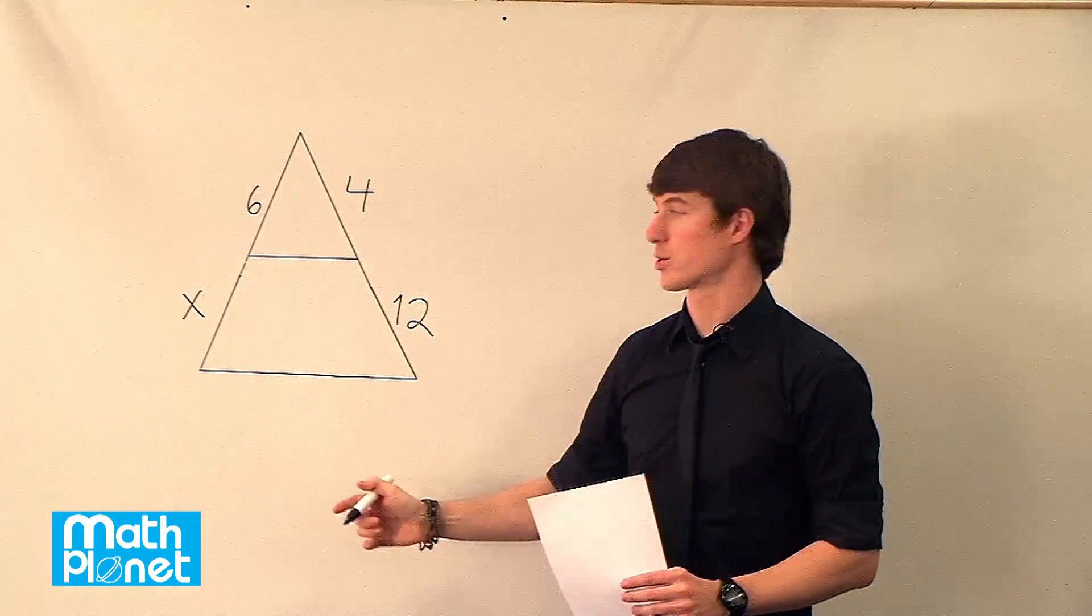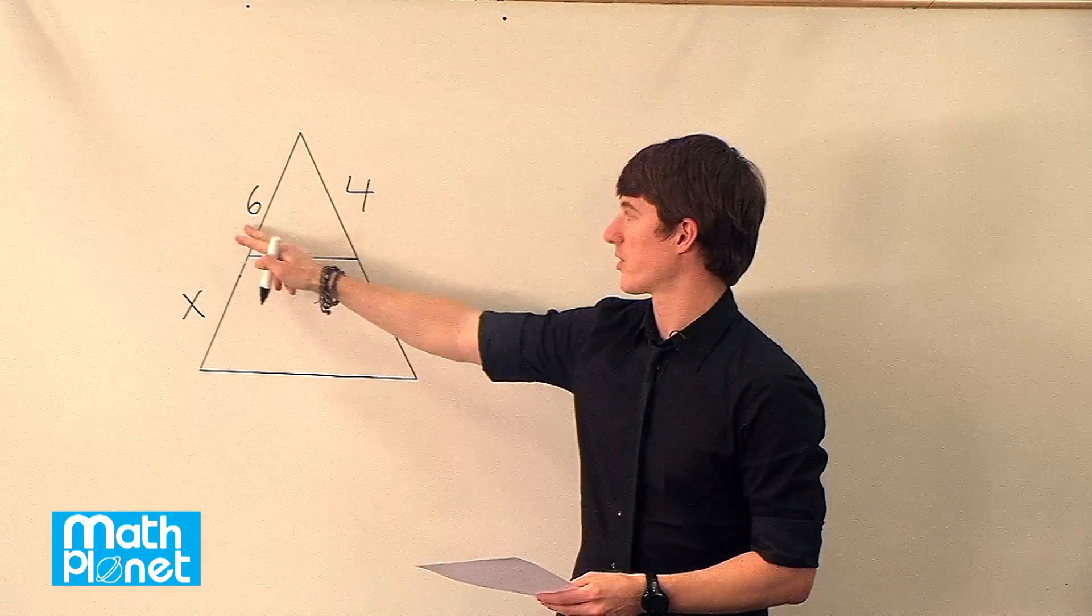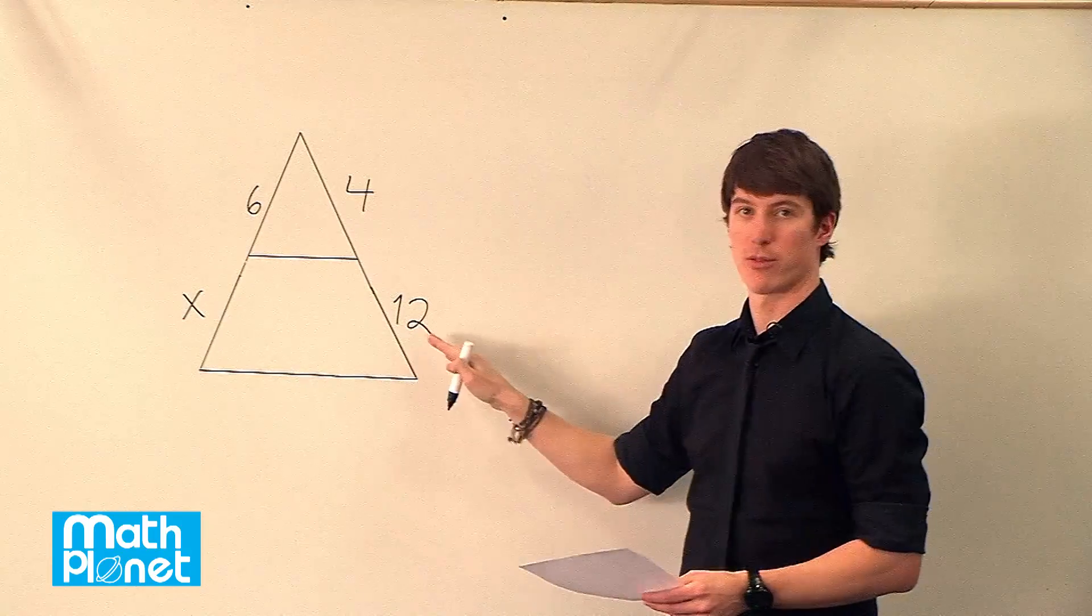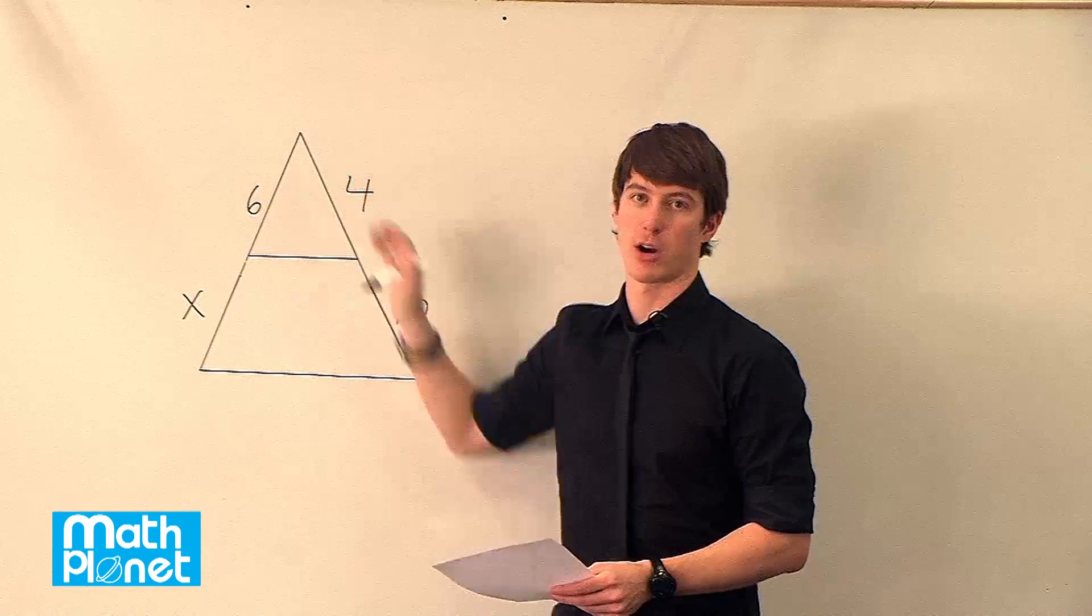To do that we can use a very basic trick about similar triangles. If we know that, for example, this ratio is 6 to 4, then we know that this ratio has to be x to 12, because they're similar triangles, because they share this angle here. So they are similar triangles.